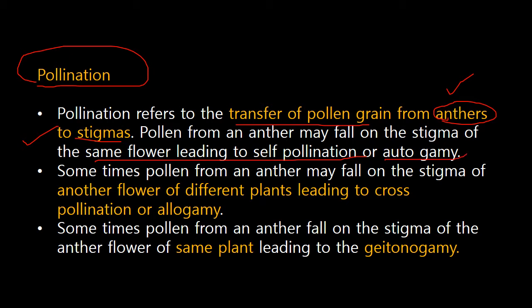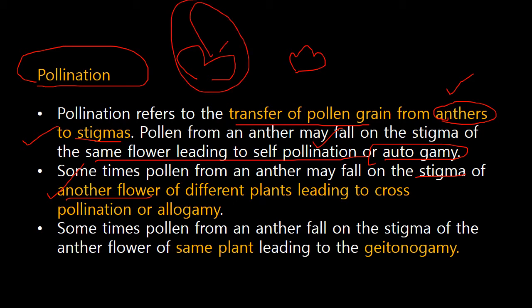When reproduction happens within the same flower, it is called autogamy or self-pollination. Whereas when the pollen from an anther falls onto the stigma of another flower — two different flowers — it is termed cross-pollination or allogamy. Cross-pollination involves two different plants or flowers, allowing different gametes to reproduce.